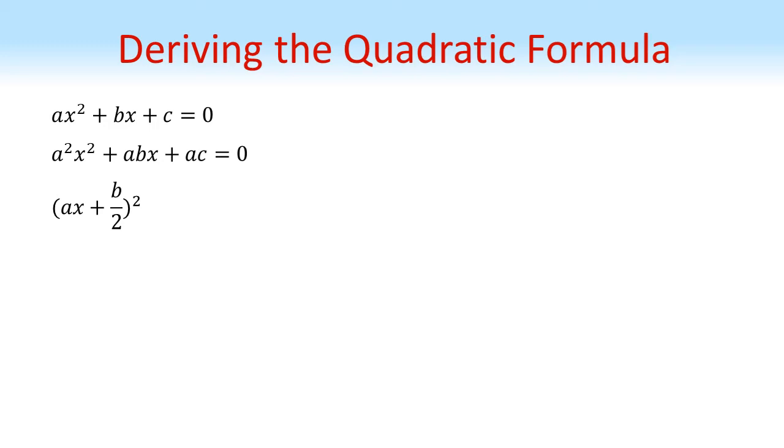Now we want to get abx as our second term. So we need something that would multiply by a twice to give us ab. So that's b over two. So we've started off with ax plus b over two all squared.